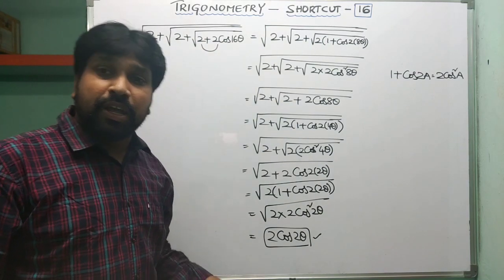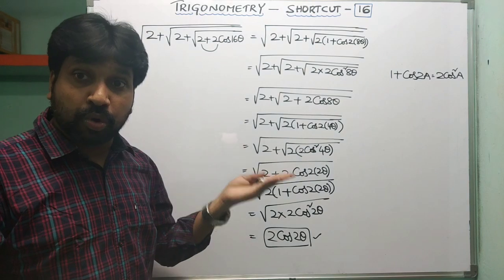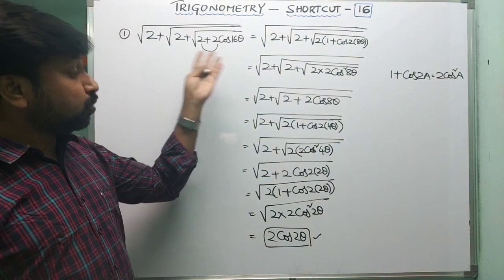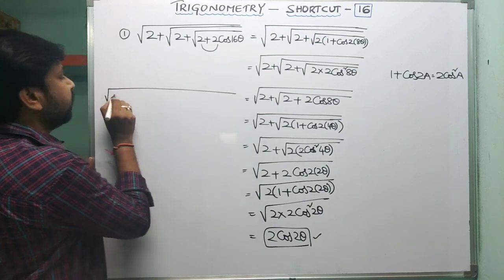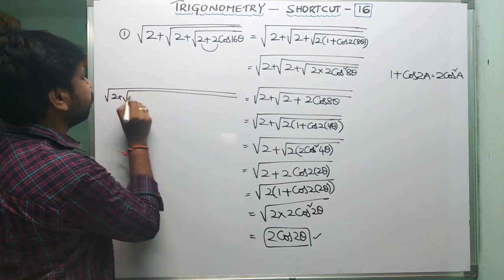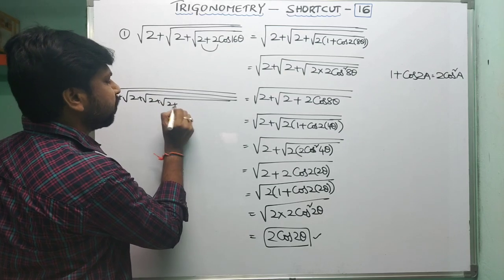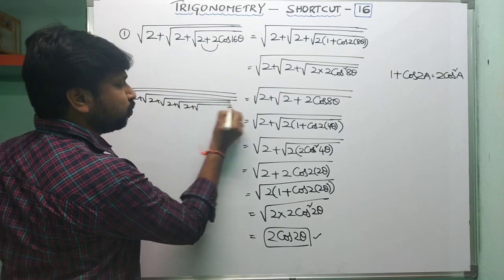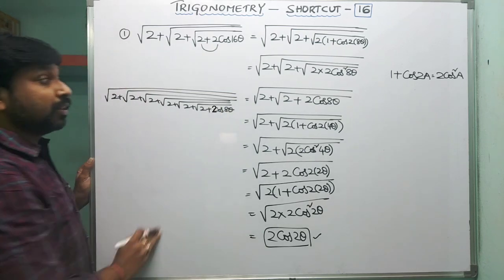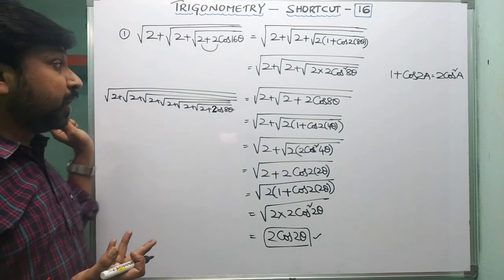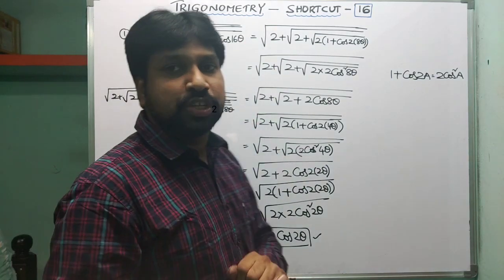This is a very lengthy method. If you want to solve in objective-type exams, we cannot apply this approach. Moreover, this was for only 3 roots. For example, if the question has 2 plus square root of 2 plus square root of 2 plus square root of 2 plus square root of 2 plus square root of 2 plus square root of 2 plus cos(8θ), it would be too lengthy using this approach. That's why I am going to reveal the shortcut.